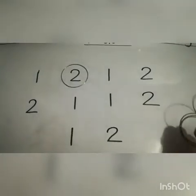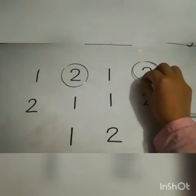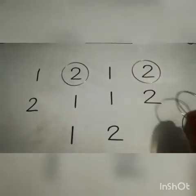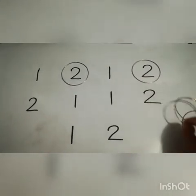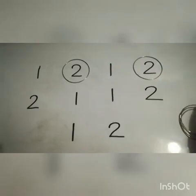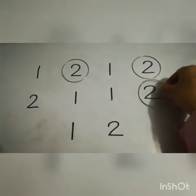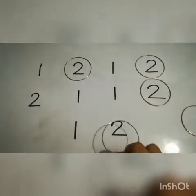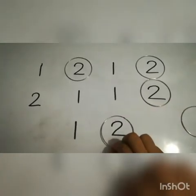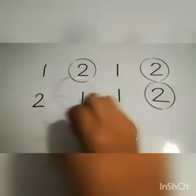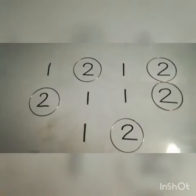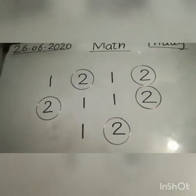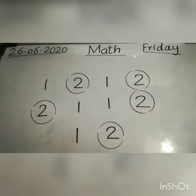There are more twos written on this board. Encircle all twos. Where is the next two? Encircle it. Yes, here it is — encircle another two. Here it is — encircle the two. Now all of the twos are encircled.